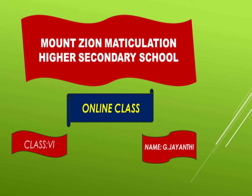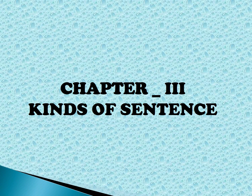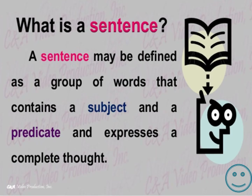Good morning, I am Jayanti. I am so happy to welcome you all for online class for subject English for standard 6th. Now we are going to discuss chapter 3rd, kinds of sentence. First of all, I would like to tell something about a sentence. A sentence may be defined as a group of words that contains a subject and a predicate and expresses a complete thought.